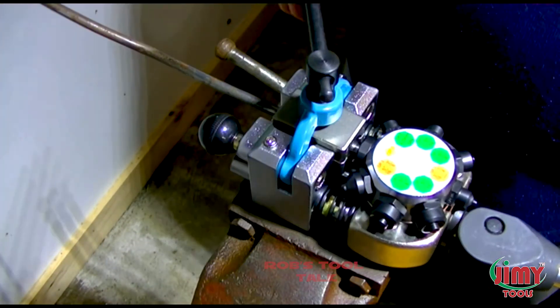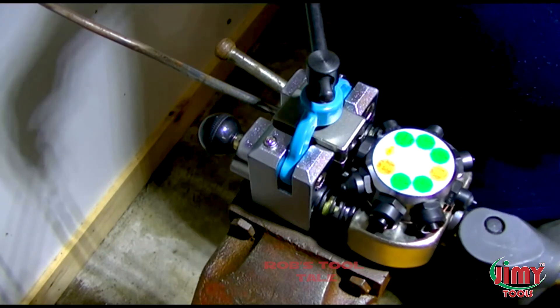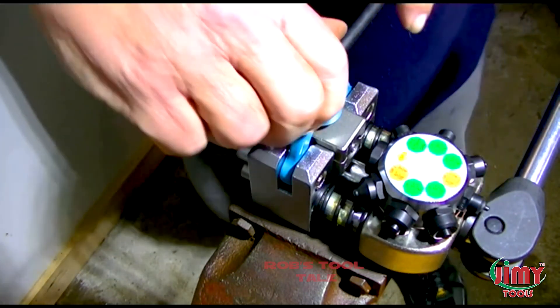For the first push, position the dies and set the pipe protrusion with the first OPO punch, then tighten the die clamp.